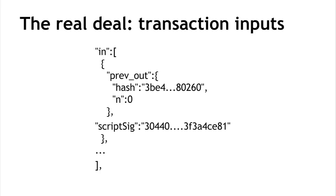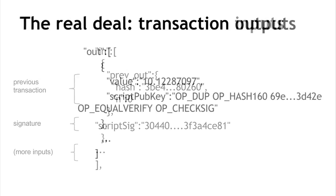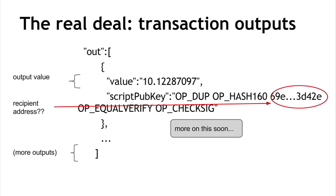The transaction inputs are just an array of inputs with the same form. Each input specifies a hash pointer to a previous transaction and the index of which output from that transaction you're claiming, plus a signature to show you have the ability to claim those previous outputs. The outputs each have a value — the sum of all outputs must be less than the sum of all inputs. Then there's something that looks like a recipient address: it specifies a hash of a public key, but there's also other stuff that looks like a script — and in fact it is a script.